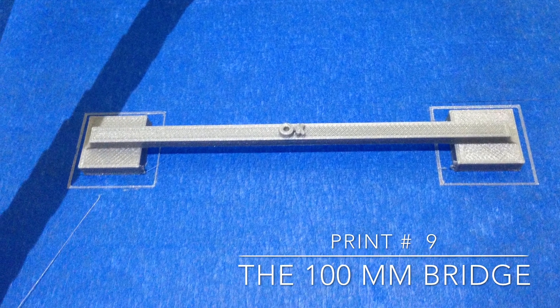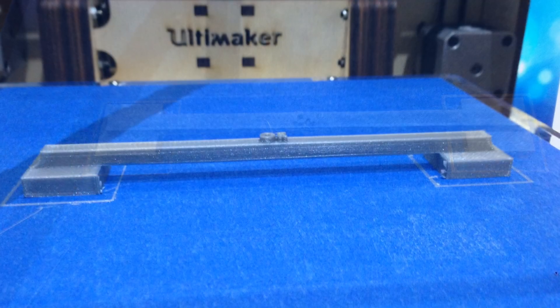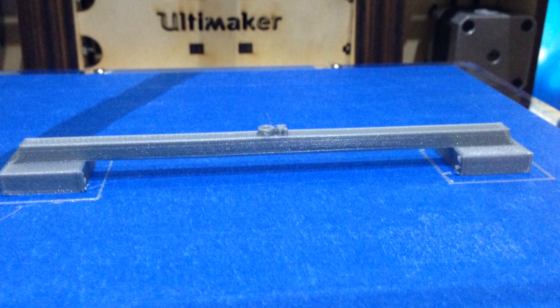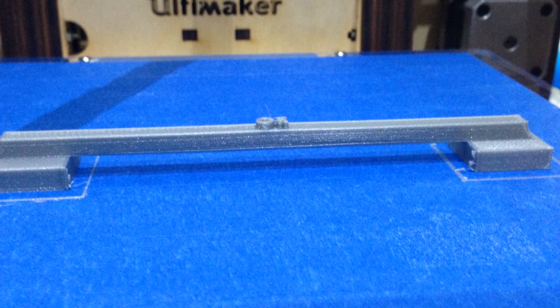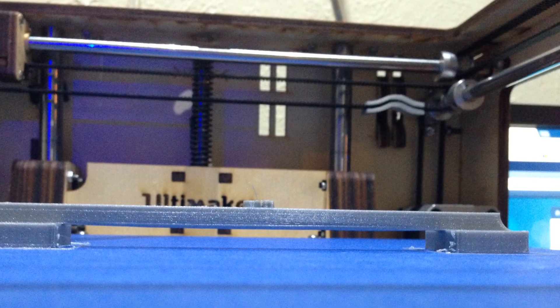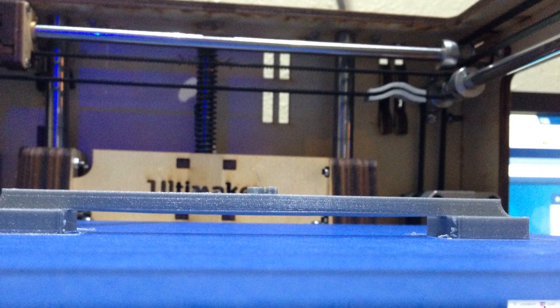I'm doing the impossible and printing in midair. What we have here is an unsupported bridge that spans 100 millimeters. You'd print this bridge to calibrate your printer so you can get the best overhangs possible.